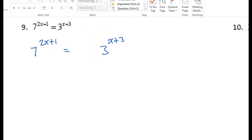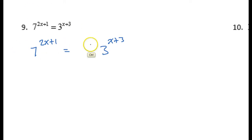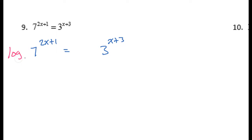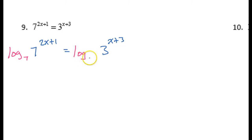The reason why I spread this out is because I need to take the log of both sides to make this work. Go ahead and use one of the bases that you have showing here, either 7 or 3. So I'm going to write log base 7 of 7 to the 2x plus 1 power, and over here I have to use the same base, so log base 7 again.